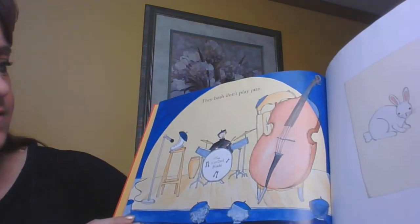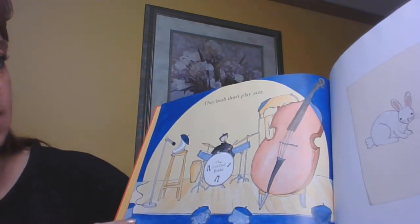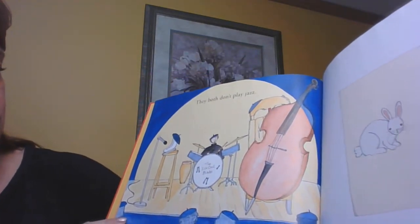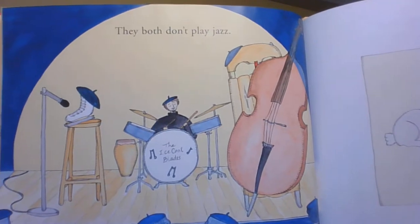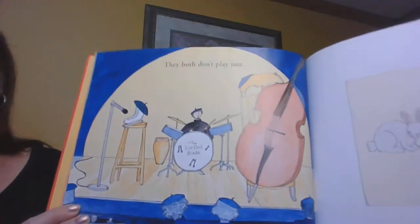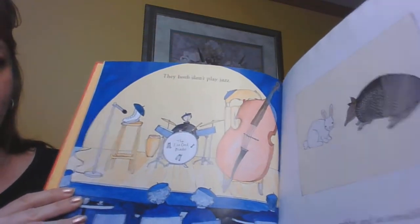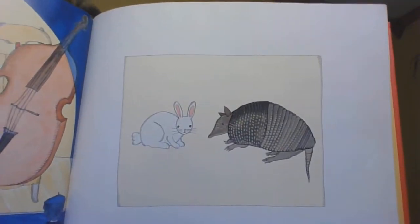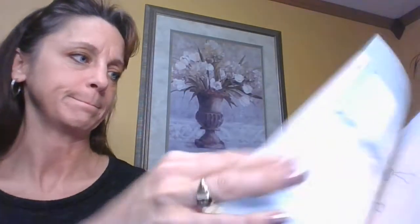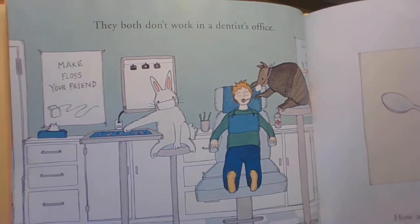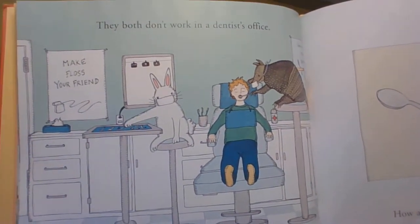Do we have a guy with a saxophone? We don't. There's a cello, there's drums, there's a singer. We'll talk more about jazz in a bit. How are a rabbit and an armadillo alike? Well, they both don't work at the dentist's office.